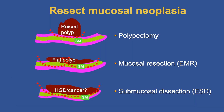There are three different terms used when we resect mucosal tumors or neoplasias: polypectomy, mucosal resection (EMR), and endoscopic submucosal dissection (ESD). Unfortunately, these three terms are often used interchangeably, but they are all distinct from one another.